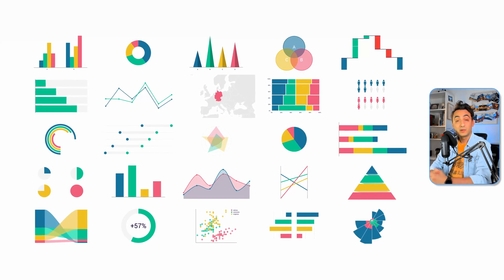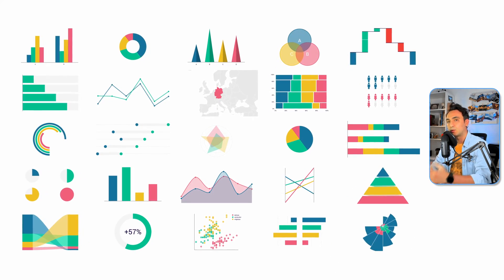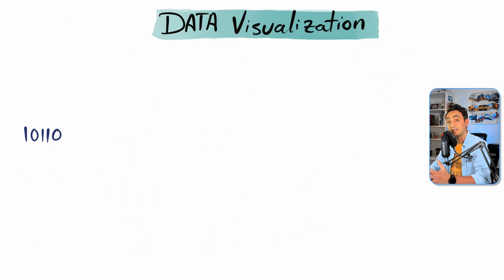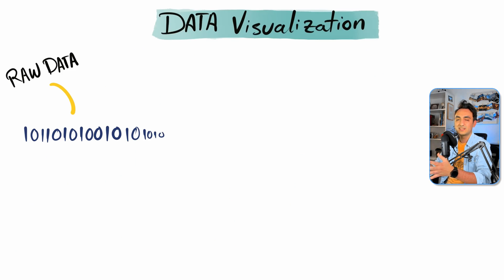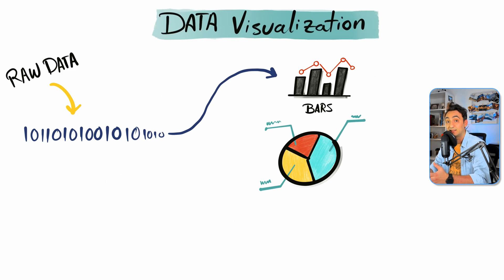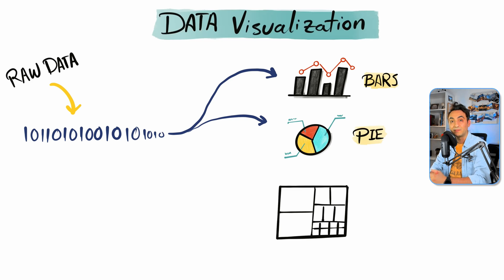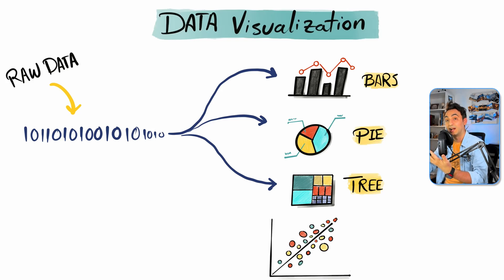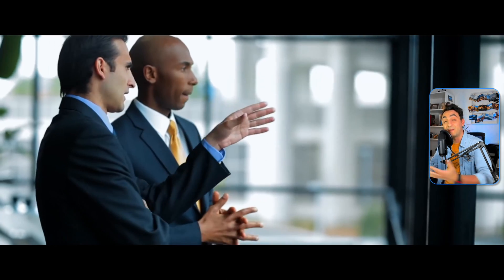So what is data visualization — sometimes called data vis? Data visualization is the process of converting boring numbers and raw data into interesting graphical elements like bars, pie charts, tree plots, and so on. Data visualization brings the data to life and makes you the master of storytelling of the insights hidden within your numbers.